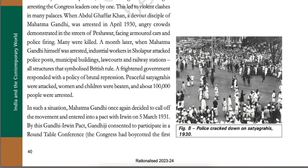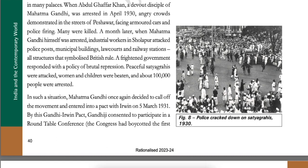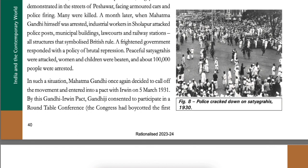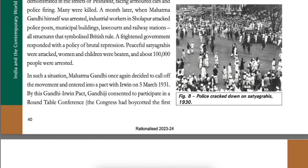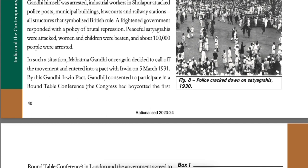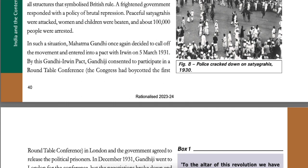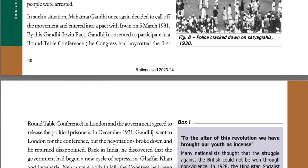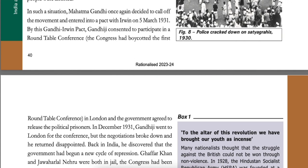When Abdul Ghaffar Khan, a devout disciple of Mahatma Gandhi, was arrested in April 1930, angry crowds demonstrated in the streets of Peshawar facing armored cars and police firing. Many were killed. A month later, when Mahatma Gandhi himself was arrested, industrial workers in Sholapur attacked police posts, municipal buildings, law courts and railway stations — all structures that symbolized British rule. A frightened government responded with a policy of brutal repression. Peaceful Satyagrahis were attacked, women and children were beaten, and about one lakh people were arrested. Mahatma Gandhi once again decided to call off the movement and entered into a pact with Irwin on 5th March 1931.